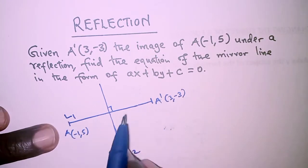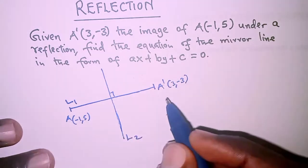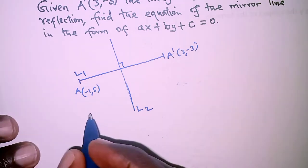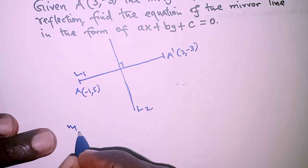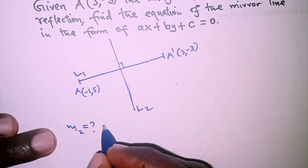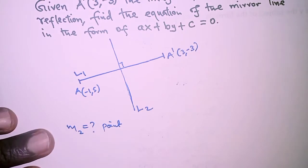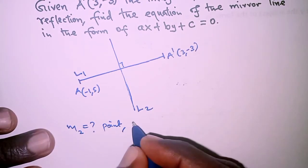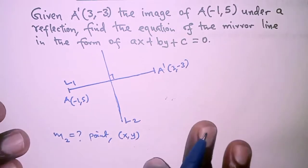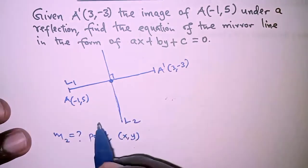So for us to get the equation of line 2 which is the mirror line, we must know its gradient, we must also know at least a point that lies on it, and then we will also use an arbitrary point (x,y).